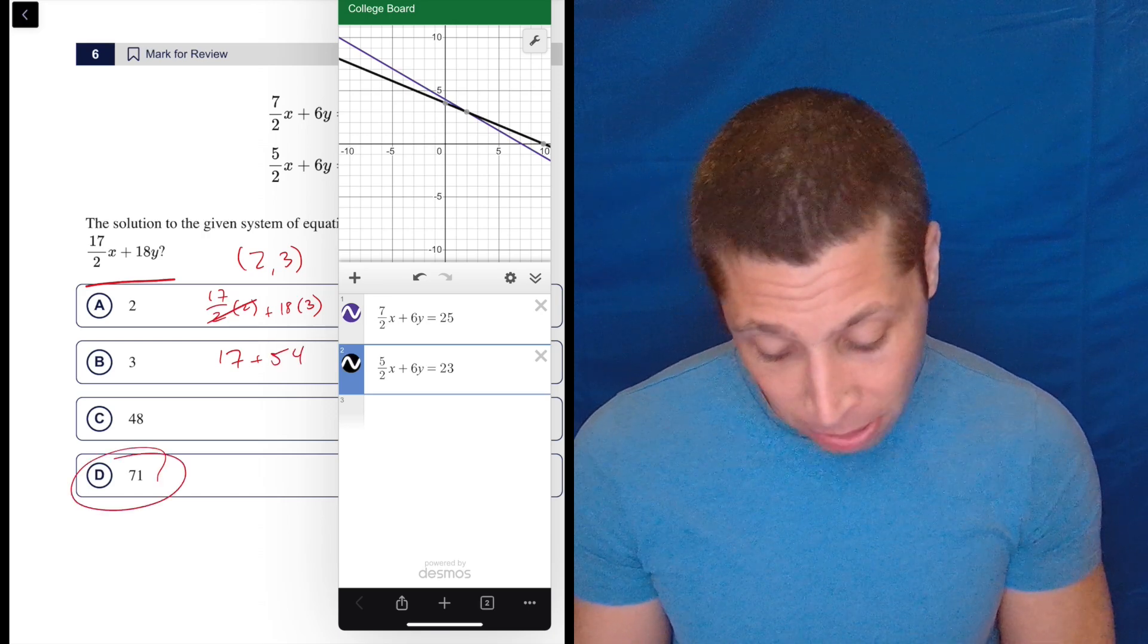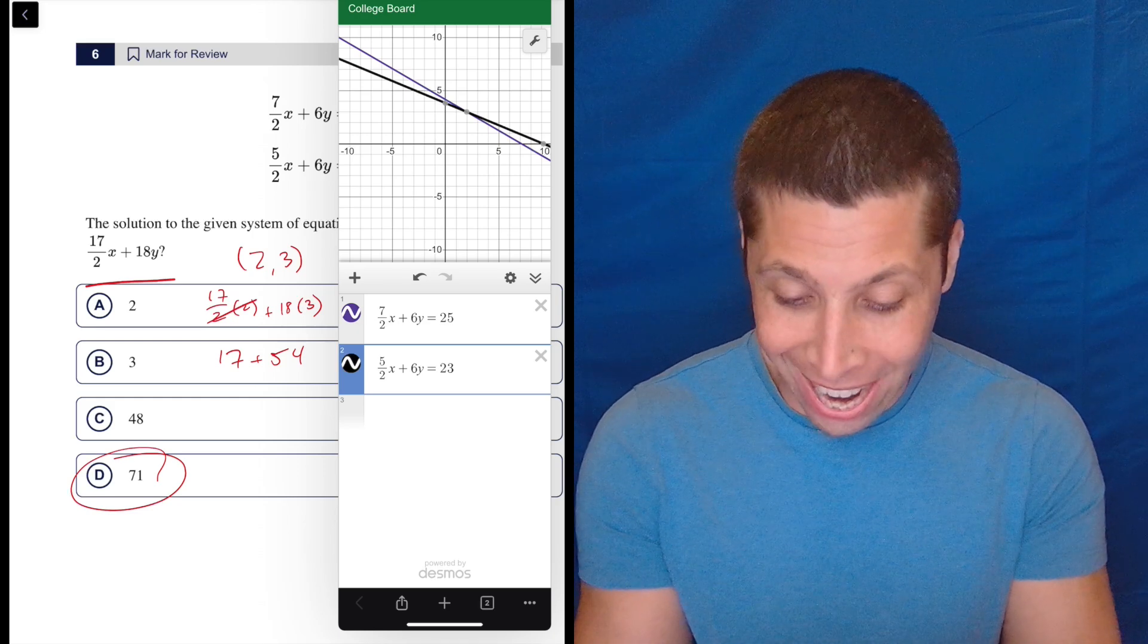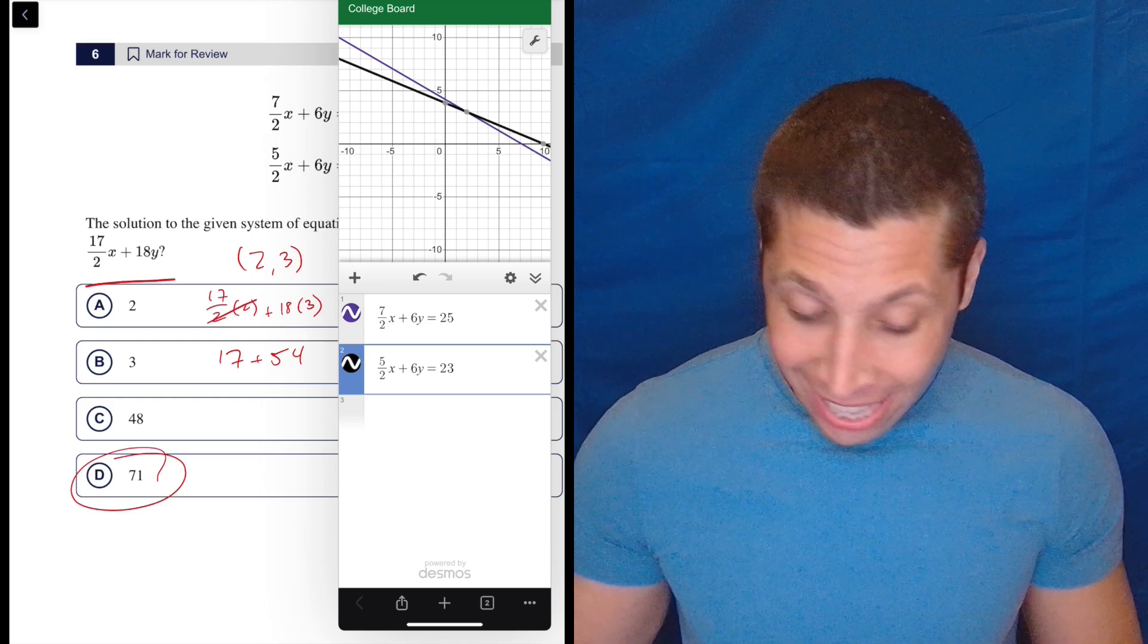So 17 and 54 must be 71 because it can't be 48. So there you go, 71. And that's done.